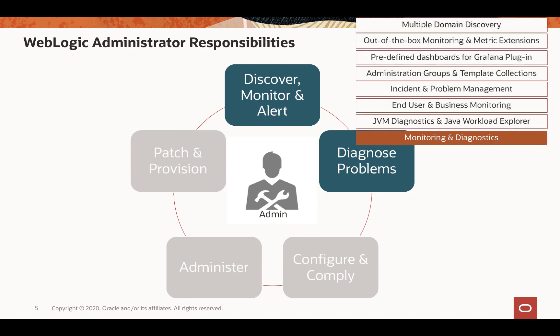First, you discover the target, configure the metrics, and set up alerting to receive notifications. Generic Enterprise Manager monitoring capabilities are available, such as out-of-the-box metrics, administration groups, or incident management. From Enterprise Manager 13.4 release update 3, a Grafana plugin is available. We have predefined dashboards for WebLogic Server for out-of-the-box use, which we will see later. And for end-user monitoring, we have real user experience insight.